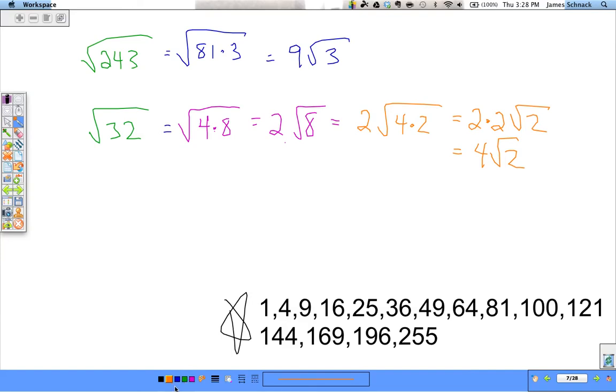Now is there a way we could have avoided doing two steps here? You bet there is. What's a bigger number on the list that goes into 32? 16. What's the square root of 16? It's 4. So the simplified form, square root of 32 no matter which way you do it is 4 square root of 2. But one way is a little quicker than the other.